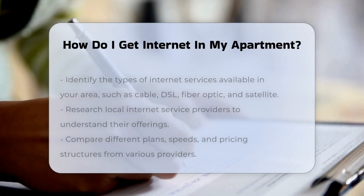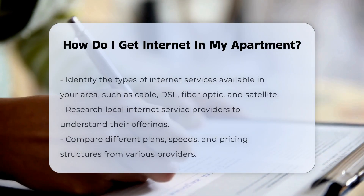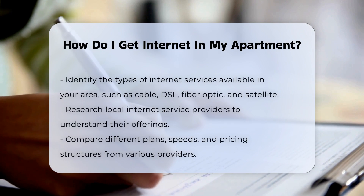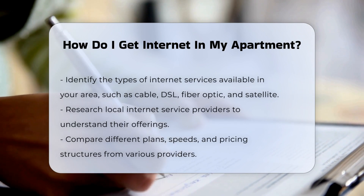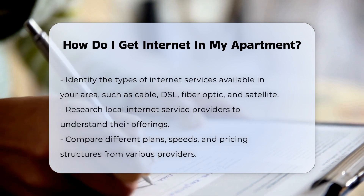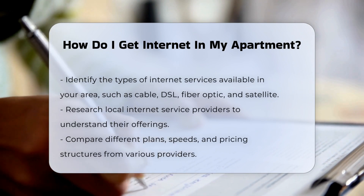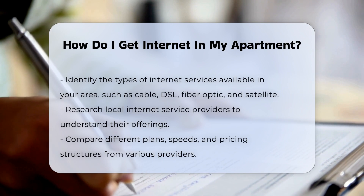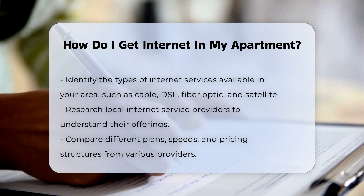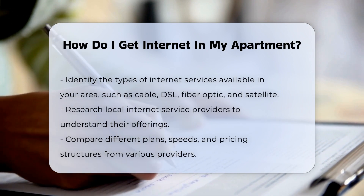Securing internet access in your apartment involves several steps. First, determine the types of internet services available in your area. Options typically include cable, DSL, fiber optic, and satellite.